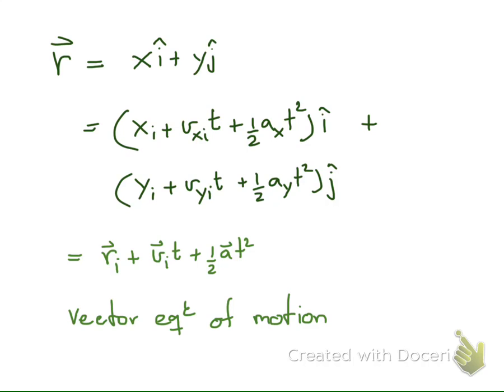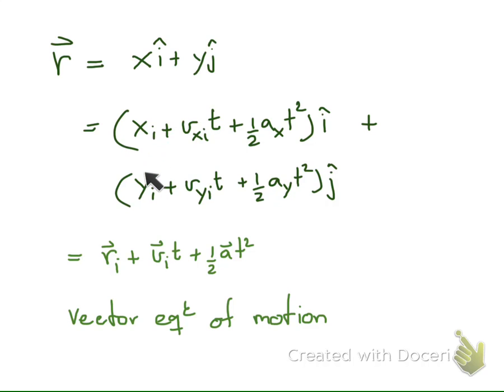Similarly, we can write down the vector equation of motion for the position vector. We can start by writing the position vector as x times unit vector i plus y times unit vector j. We know from the previous slide that x is equal to xi plus vxi times t plus half of ax times t squared, and y is equal to yi plus vyi times t plus half of ay times t squared.